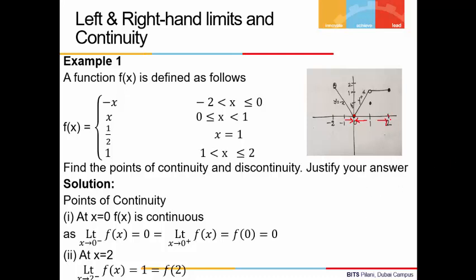Another point of continuity is x = 2. The function is not defined beyond x = 2, so we have only a one-sided limit. Approaching 2 from the left, the function approaches y = 1. The limit from the left is 1, and the value of the function at x = 2 is also 1. So the function is continuous at x = 2. Remember: darkened points on the graph indicate the function is defined at those points.